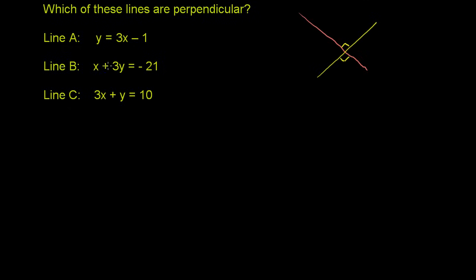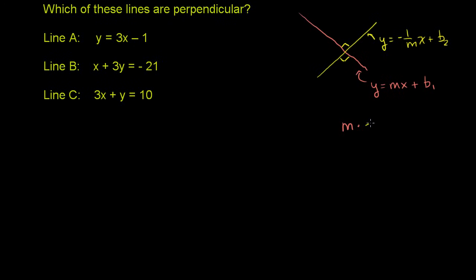Now, if two lines are perpendicular, and the slope of this orange line is m — so its equation is y = mx + b1, some y-intercept — then the equation of this yellow line has a slope that is the negative inverse of this one. That line is y = (-1/m)x plus some other y-intercept. Another way to think about it: if two lines are perpendicular, the product of their slopes is going to be negative 1. So m times (-1/m) equals negative 1.